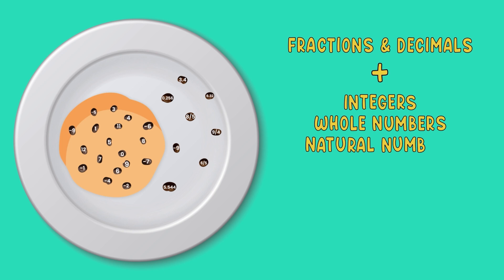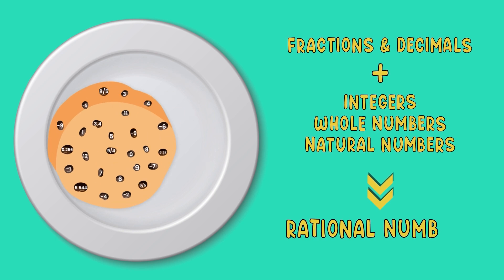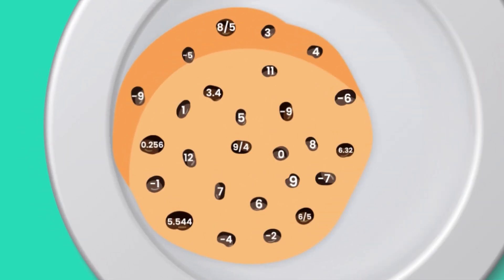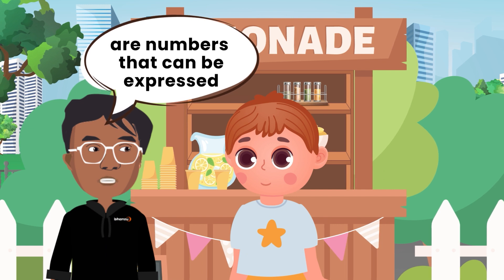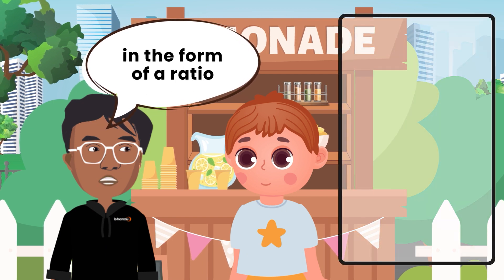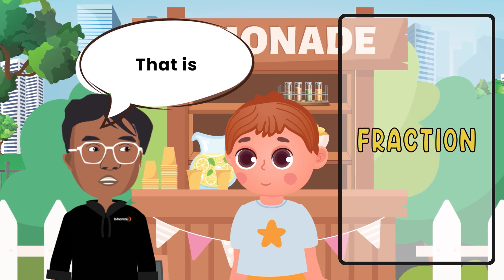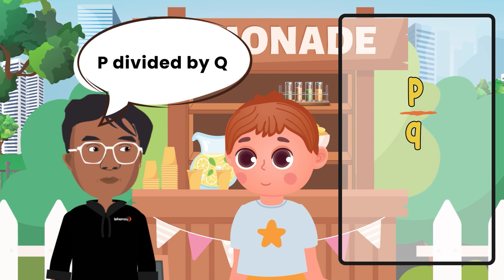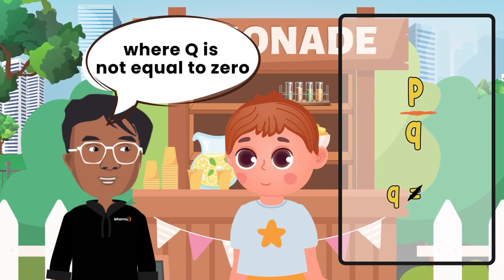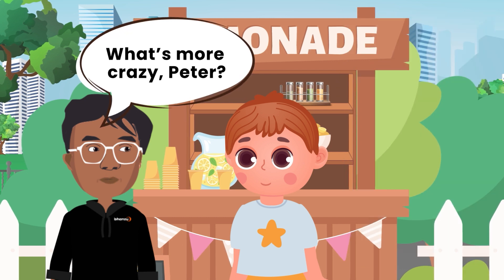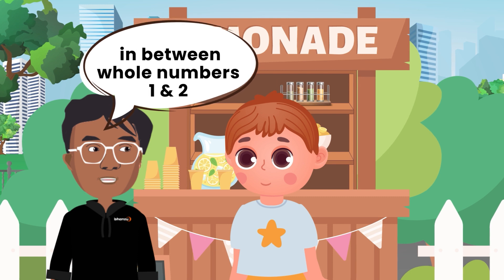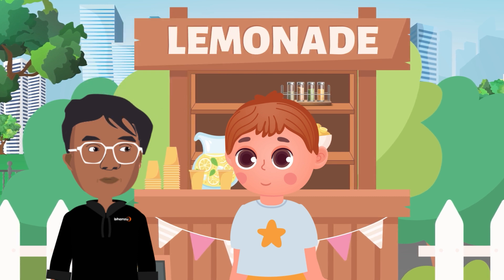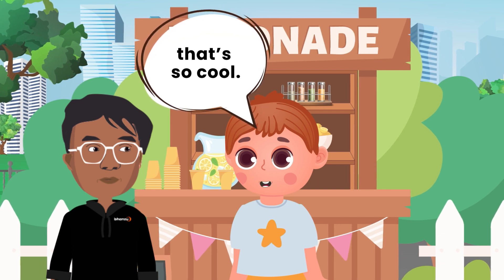Yes, you're right. They all fall under the category of rational numbers. Remember our big circle? Now, if you add fractions and decimals to our existing circle of integers, whole numbers and natural numbers, they would all be called rational numbers. And our big circle looks like this. Rational numbers are numbers that can be expressed in the form of a ratio or fraction. That is p divided by q where q is not equal to zero. What's more crazy, Peter? There are infinite numbers in between whole numbers 1 and 2. Wow, that's so cool. But how?